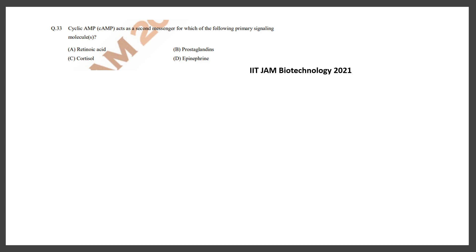In 2021 they gave a question: cyclic AMP acts as a second messenger for which of the following signaling pathways — retinoic acid, cortisol, prostaglandin, epinephrine. From the number of options you can understand this is an MSQ type question. The correct answers are epinephrine as well as prostaglandin.